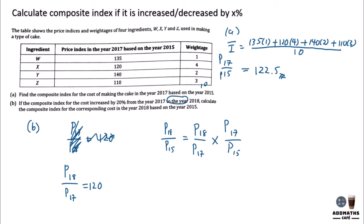Because of this, substitute: 2018 based on 2017 is 120, multiplied by 2017 based on 2015 which is 122.5. To get the final base-100 answer, divide by 100, giving a final answer of 147.